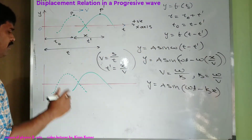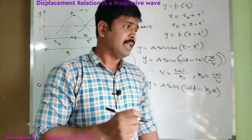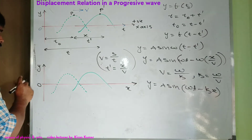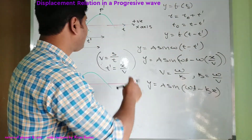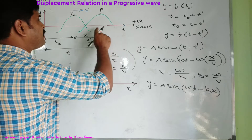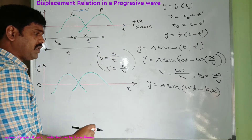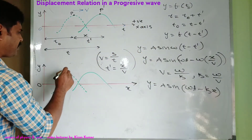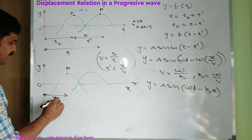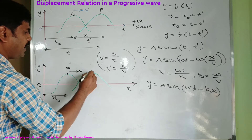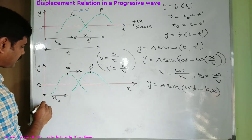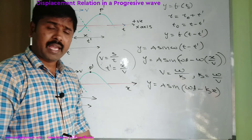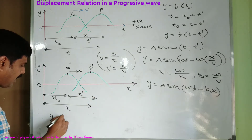Continuing, O is the origin. On the x-axis we consider displacement x, and on the y-axis the displacement equation. The displacement is a function of the horizontal direction. The position of the particle is p, with initial distance x-naught. The wave is moving with velocity v and reaches point p-dash. The distance x is from p to p-dash, with remaining distance x-dash between them. Displacement is a function of x.